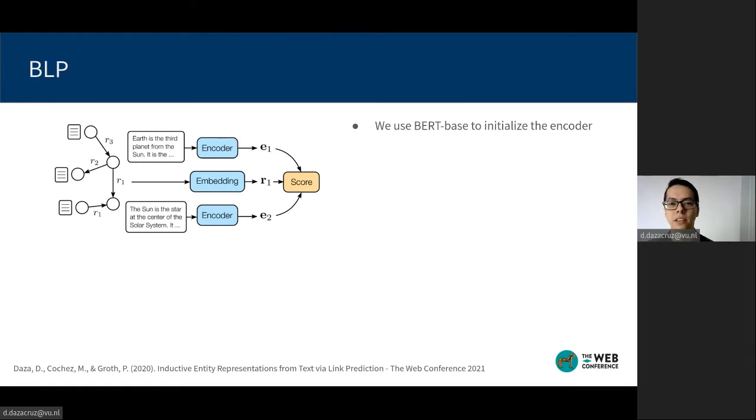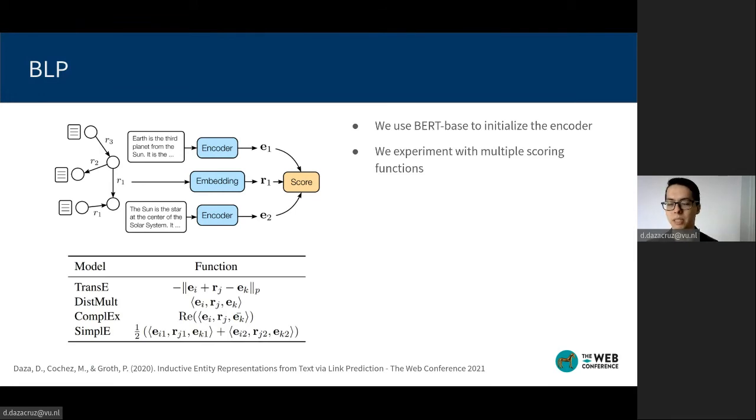We call this method BERT for link prediction or BLP. We then experiment with multiple scoring functions, each of which makes different assumptions about the geometry of the embedding space. This allows us to determine different interactions between the encoder and representations of entities.